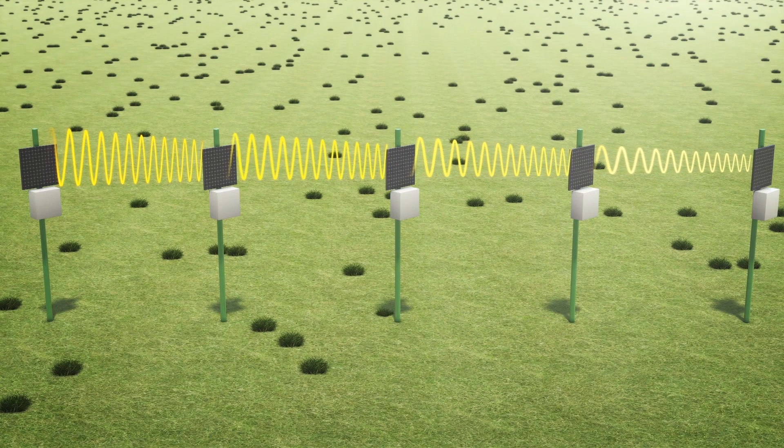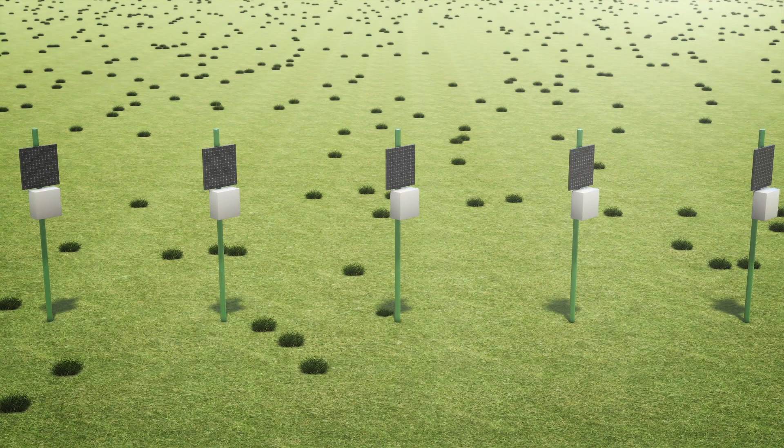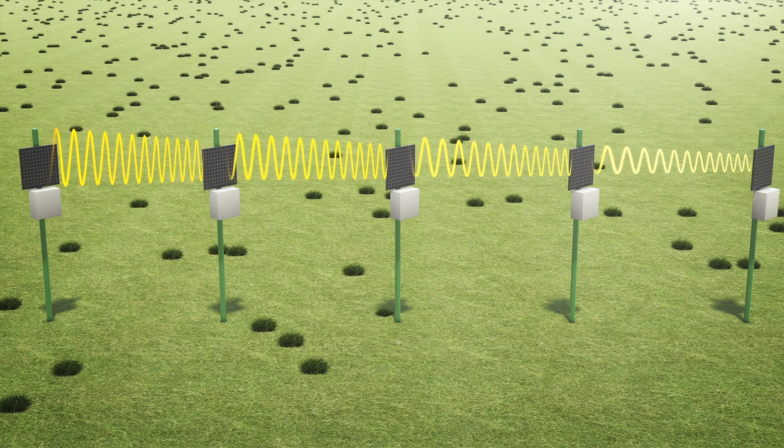Tiny lasers would be used to sense when objects like birds pass through the microwave beam, in which case the beam would shut off instantly until the object has passed through.